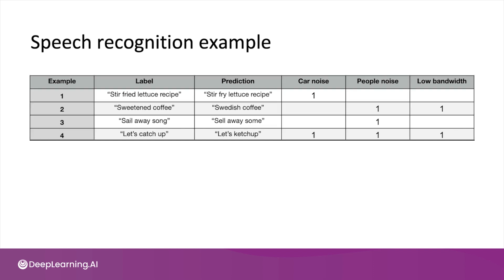Until now, error analysis has typically been done via a manual process, say in a Jupyter notebook or tracking errors in a spreadsheet. I still sometimes do it that way, and if that's how you're doing it too, that's fine. But there are also emerging MLOps tools that are making this process easier for developers. For example, when my team at Landing AI works on computer vision applications, the whole team now uses Landing Lens, which makes this much easier than a spreadsheet.